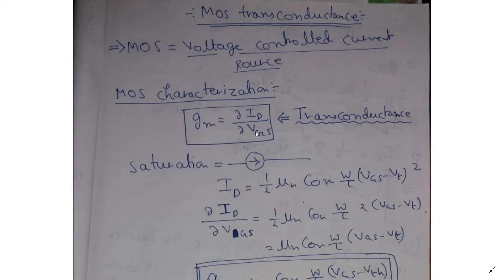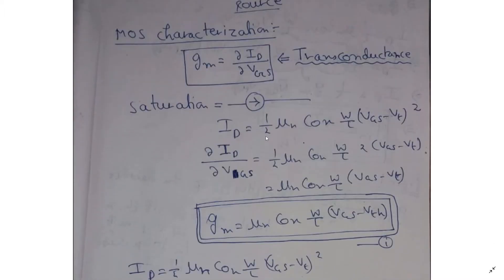Now let us calculate this factor mathematically — it is very simple. You know differentiation from your plus-2 courses. ID = (1/2) · μn · Cox · (W/L) · (VGS − VT)². Just differentiate with respect to VGS, and you get ΔId/ΔVGS = (1/2) · μn · Cox · (W/L) · 2 · (VGS − VT). The differentiation of X² is 2X, so for (X − constant)² it is 2·(X − constant). These two factors of 2 cancel each other, giving ΔId/ΔVGS = μn · Cox · (W/L) · (VGS − VT).